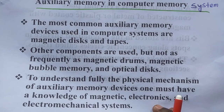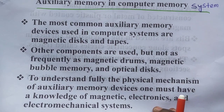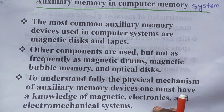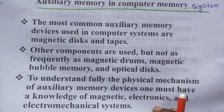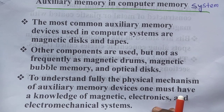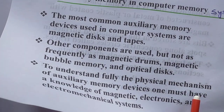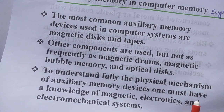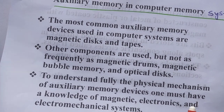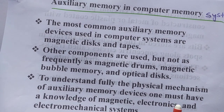Basic concepts of electronics and electromechanical systems are needed to understand how different data is stored in bit form in a magnetic disk. You need to analyze how much data can be stored and how it is designed. The physical mechanism of auxiliary memory is important to store different data.